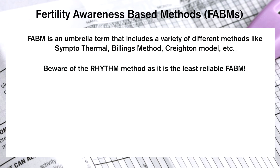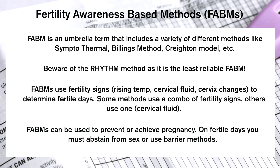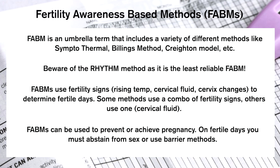The one you don't want to look at is the rhythm method. Fertility awareness-based methods use fertility signs like rising temperature, cervical fluid, and cervical position to determine fertile days. Some methods use a combo of fertility signs while others use only one, like cervical fluid. These methods can be used to prevent or achieve pregnancy, but on fertile days you must abstain from sex or use barrier methods.